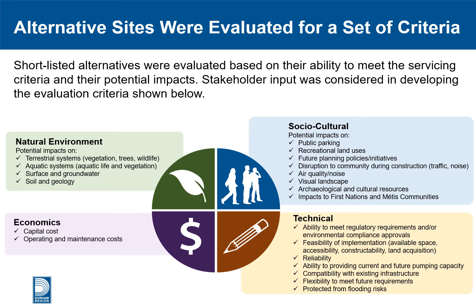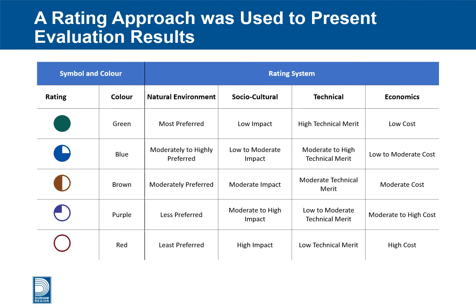The shortlisted alternatives were evaluated based on their ability to provide required capacity and their potential impacts defined by criteria in four categories: natural environment, socio-cultural, technical, and economic. Public and stakeholder input from the first public information center was considered in developing the evaluation criteria, and the impact on public parking space was identified as an additional criterion based on this input. A color and symbol-based rating approach was used to present the evaluation results, where a green circle represents the most preferable and an empty red circle represents the least preferred solution.